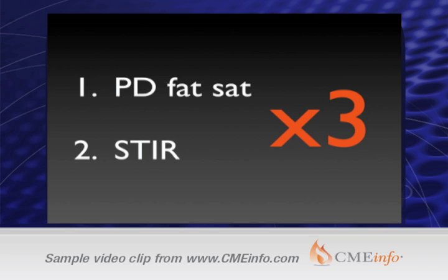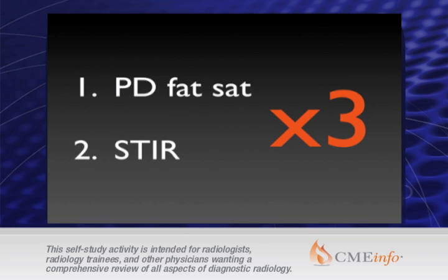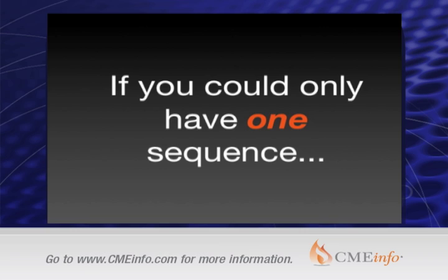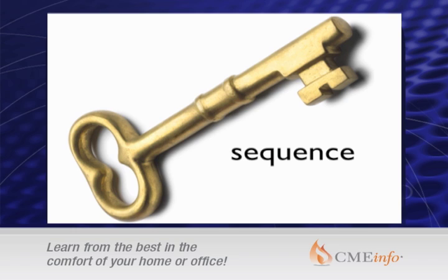If you give a blanket recipe like this to your techs, they will just go down the numbers one, two, three, four, five, six. When actually you should refine it a little bit. Think about what if we could only have one sequence — what if the patient freaks out because they don't like the tight spaces, or they've been lying there for 30 minutes and it really hurts and they start quivering. Maybe you should move certain sequences up to the front of the line — have a key sequence.